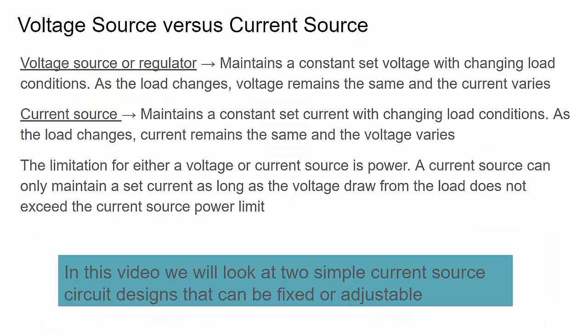What is a current source and what is a voltage source? A voltage source or voltage regulator maintains a constant voltage in the face of a changing load — whether it's 3.3V, 5V, or 12V, it keeps that voltage constant while allowing current to vary. A current source is the opposite: it maintains a set current value and allows the voltage to adjust as the load changes.